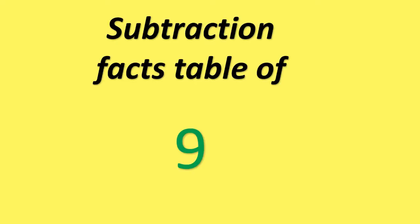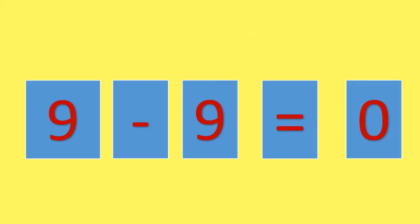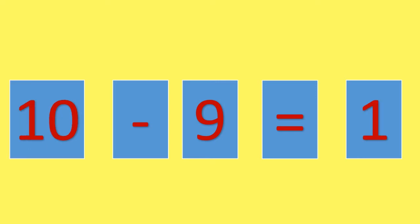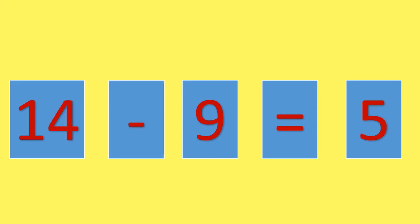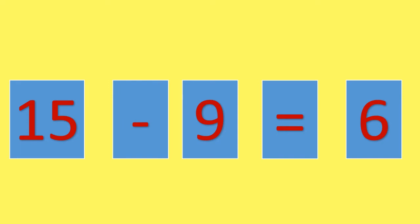Let's learn the Subtraction Facts Table of 9. 9 minus 9 is equal to 0. 10 minus 9 is equal to 1. 11 minus 9 is equal to 2. 12 minus 9 is equal to 3. 13 minus 9 is equal to 4. 14 minus 9 is equal to 5. 15 minus 9 is equal to 6.